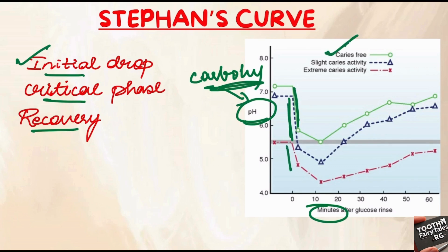In the healthy tooth and also in the teeth which are showing slight caries activity and also in the teeth showing extreme caries activity, this mechanism is same. After the consumption of carbohydrates, the bacteria start fermenting sugars, and then the pH starts to drop down rapidly.